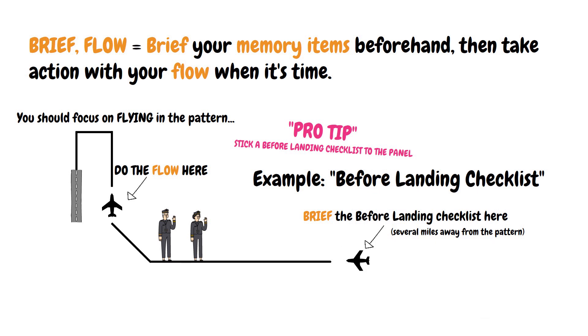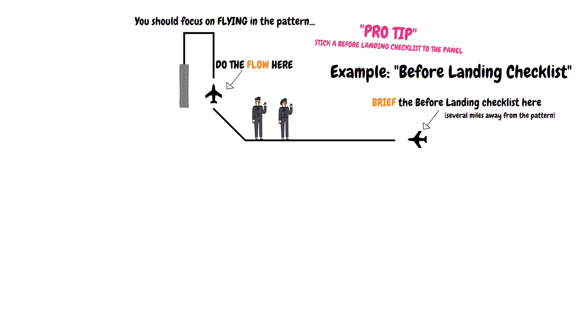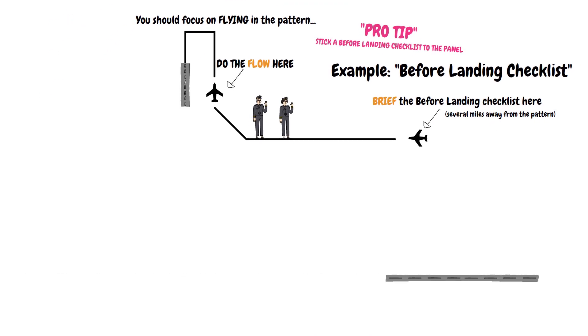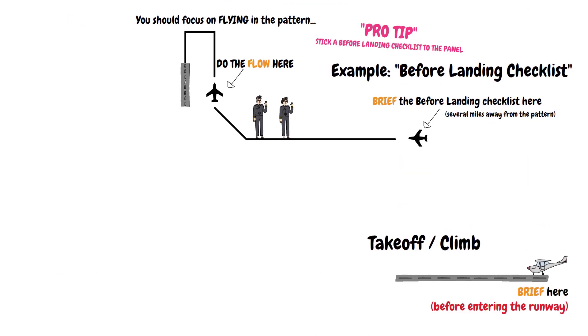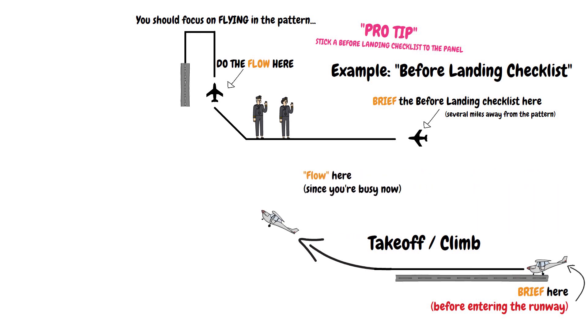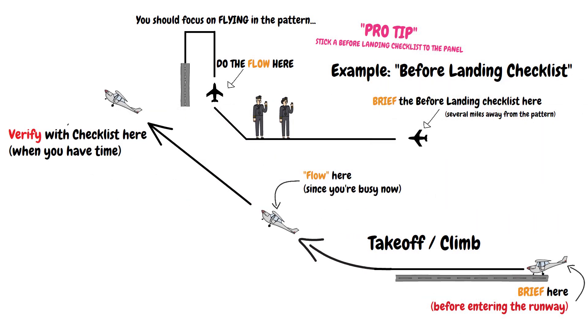Another good example of the brief-flow method is a takeoff and climb. It's a good idea to brief your takeoff and climb before you enter the runway, doing the proper flows once airborne and verifying with the checklist whenever you have time during a less busy part of the climbout.